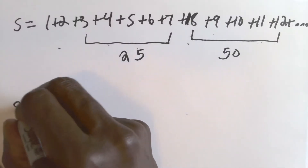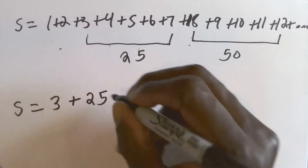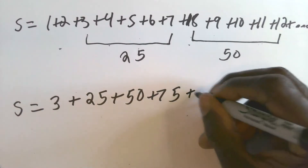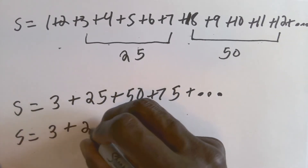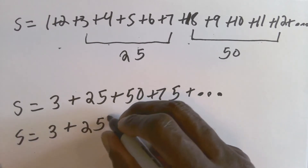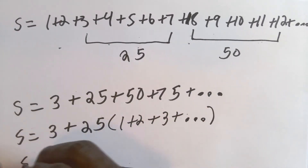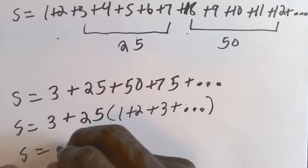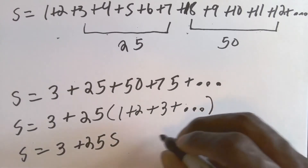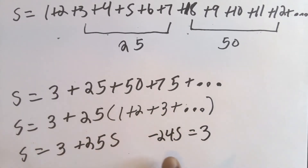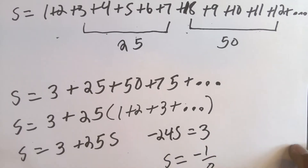So S equals — again omitting the first two numbers — 3 plus 25 plus 50 plus 75 plus 100 plus 125 and so on. Since all these are multiples of 25, I can factor it out, and what's inside the parentheses is S again. So S equals 3 plus 25S. Subtracting 25S from both sides: negative 24S equals 3. Dividing both sides by negative 24: S equals negative 3 over 24, or again negative one over eight.